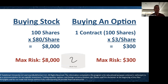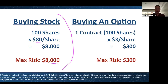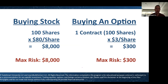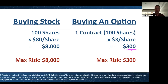Let's compare buying stock vs. buying an option side by side. Buying 100 shares at $80 costs $8,000 — that's your max risk. With one option contract representing the same 100 shares, you only pay $3 per share, getting into the trade for much less capital. No matter what happens, your risk is completely capped at $300 — even if the stock gaps against you.